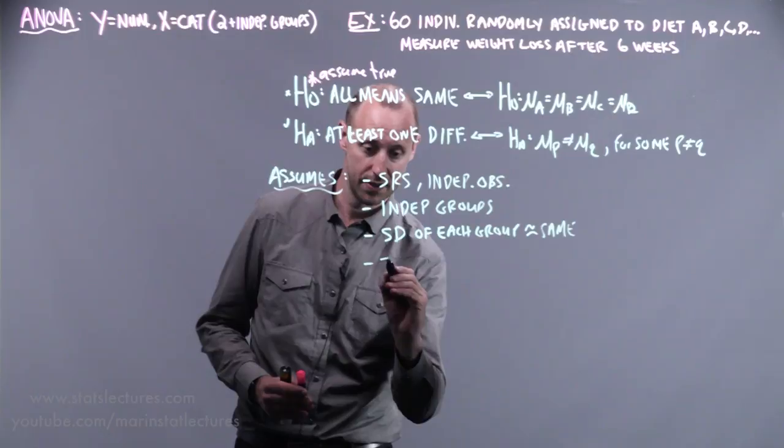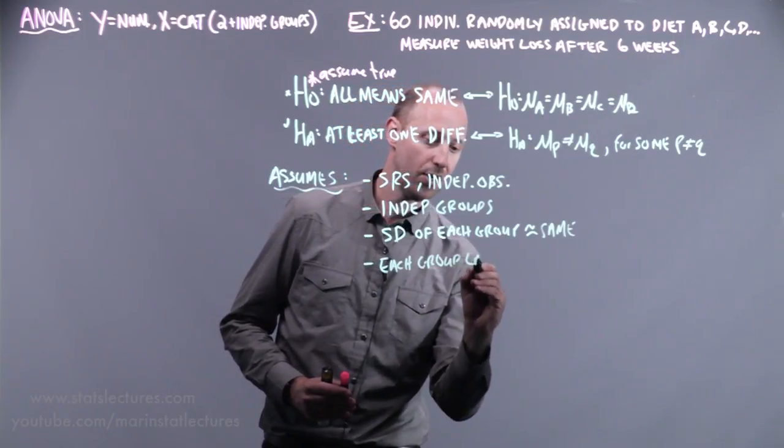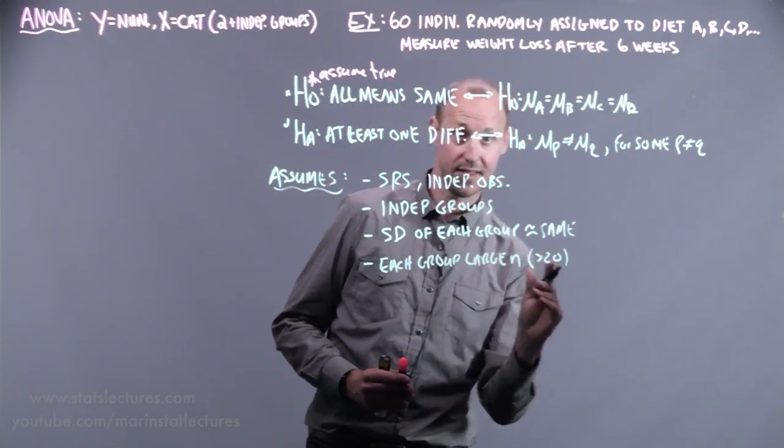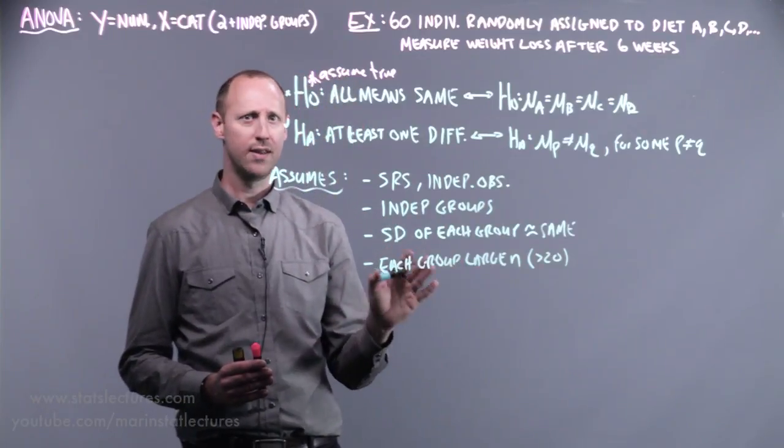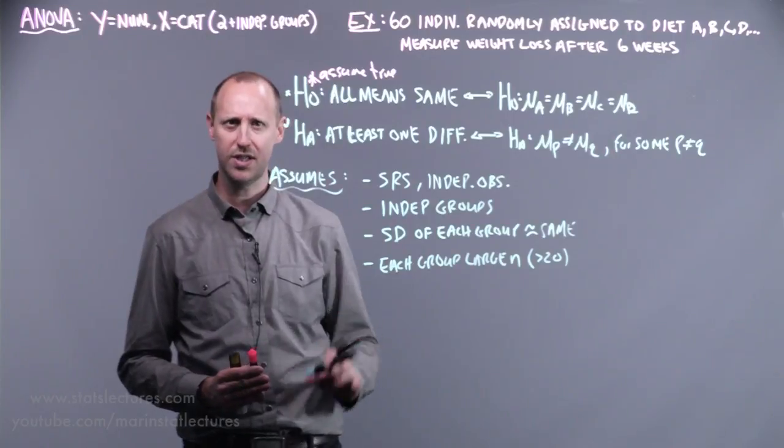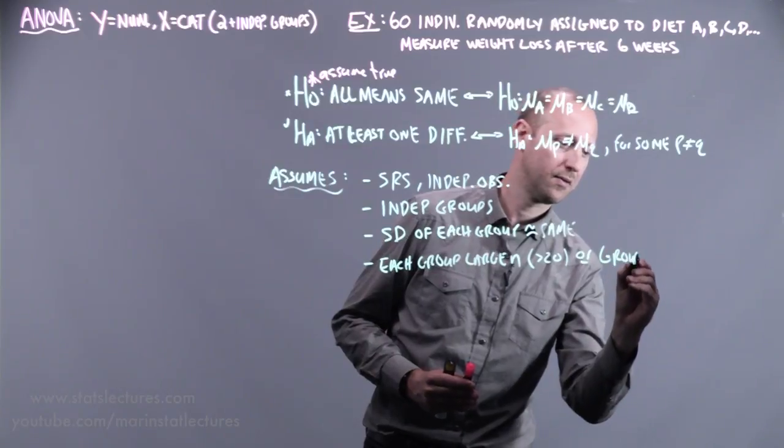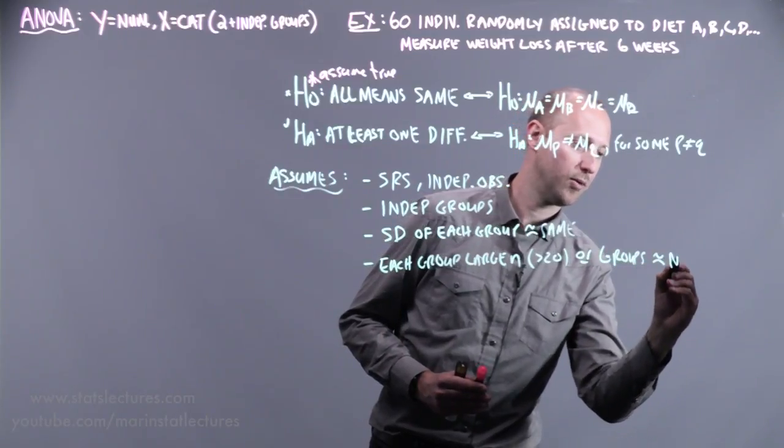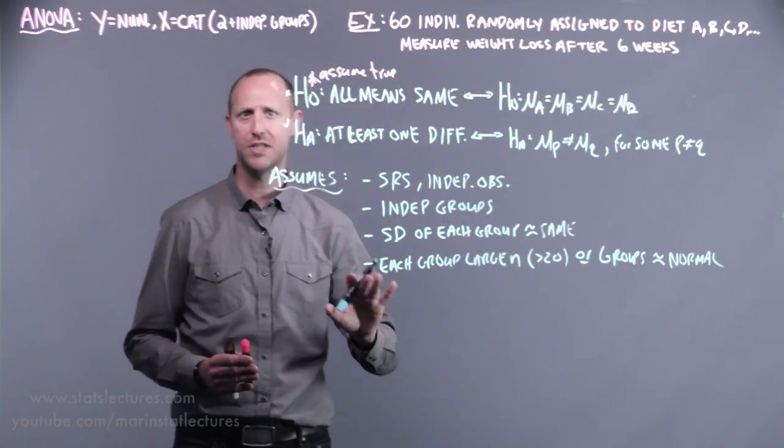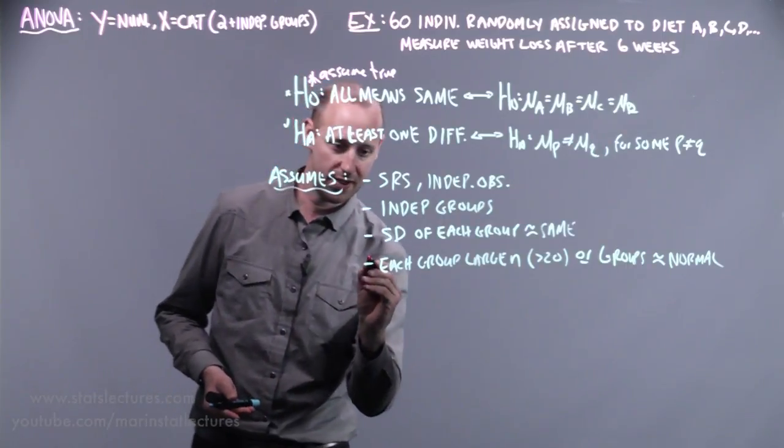And then finally, the large sample assumption. We assume that each group has a large sample size, bigger than 20 as the guide. We've noted before that the more skewed each group is, the larger the sample size should be. So 20 is just a rough guide. Or groups are approximately normal—the distribution of weight loss in each of these four groups is approximately normal or symmetrically distributed around its mean.